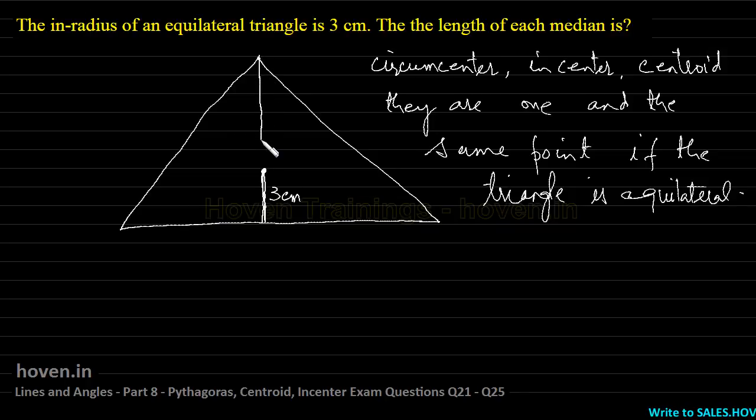And the equilateral triangle is fully symmetrical. So the median of this equilateral triangle will also be along the same line. And this will be also the centroid.